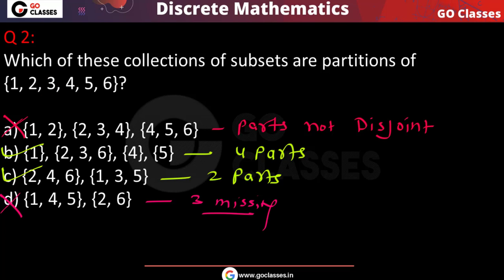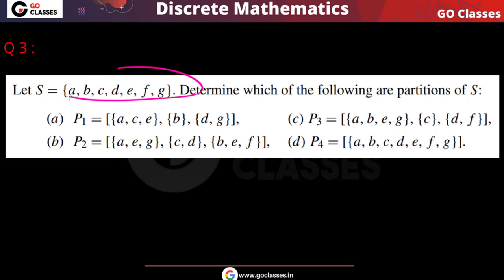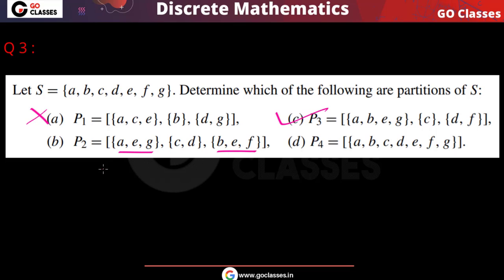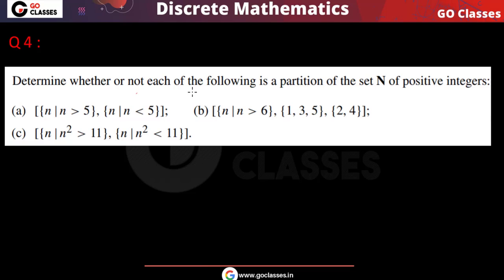For set S = {A,B,C,D,E,F,G}: P1 — does not cover F, so not a partition. P3 — has three parts covering all elements {A,B,C,D,E,F,G}, mutually disjoint and non-empty — this is a partition. P2 — two parts are not disjoint, not a partition. P4 — only one part, the set S itself — this is also a valid partition.